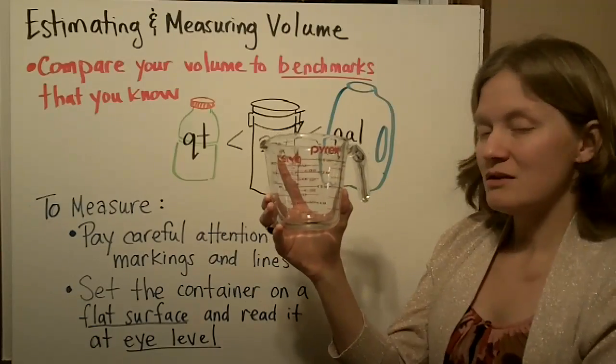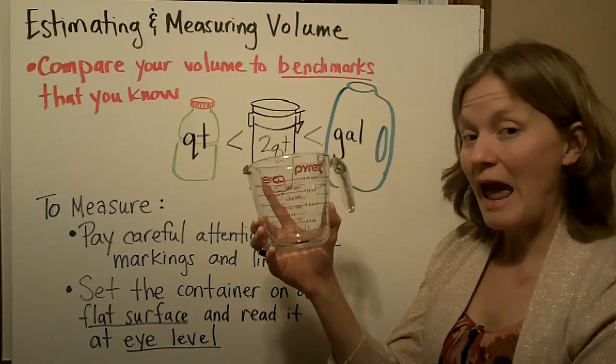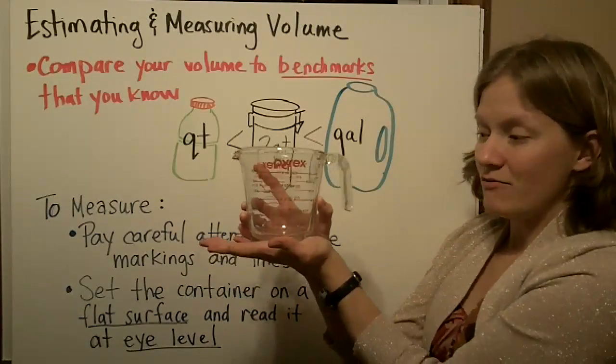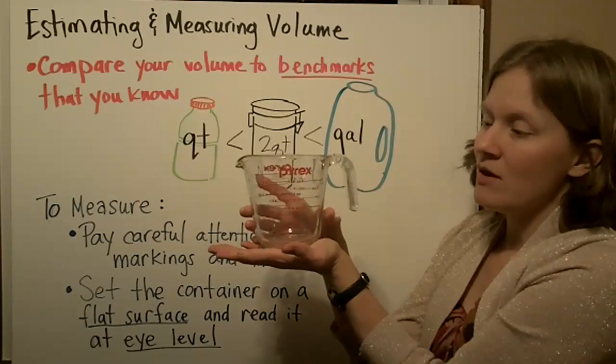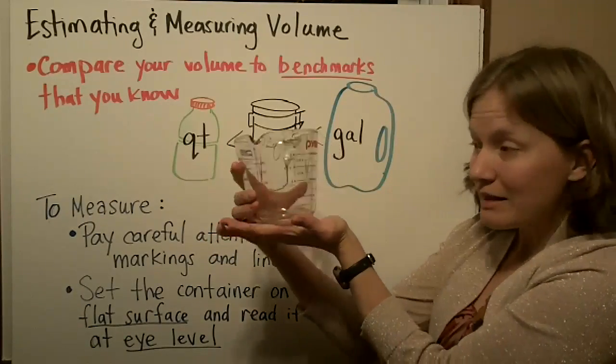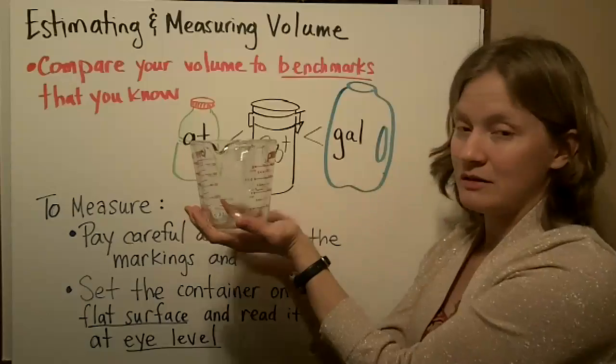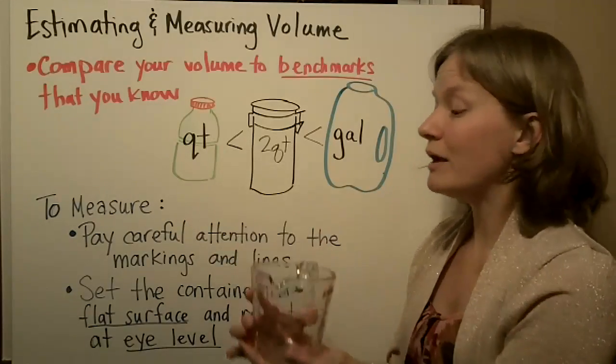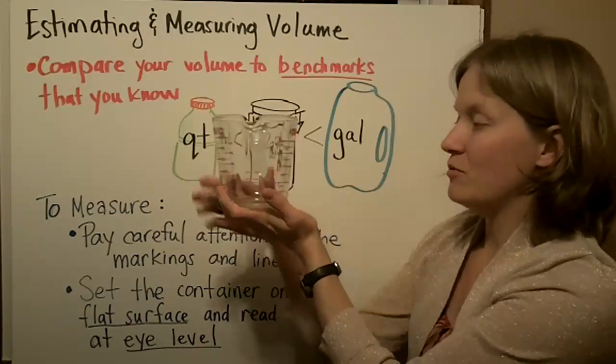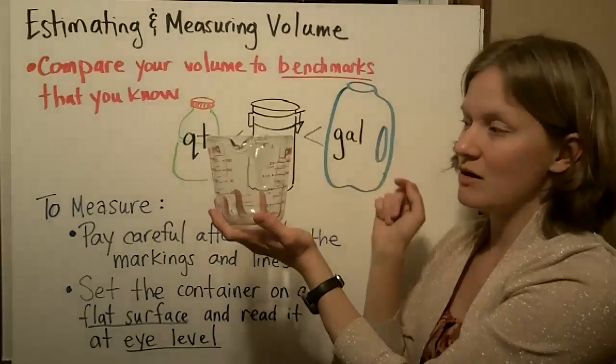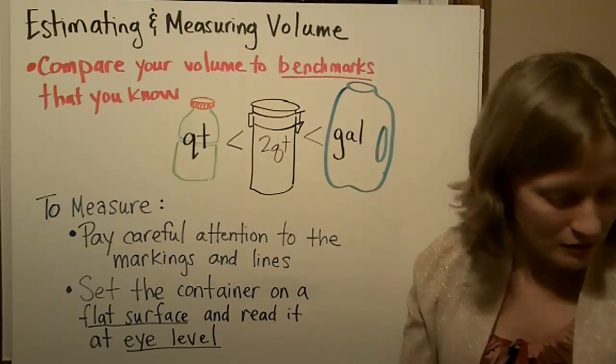To get an accurate reading, you need to set it on a flat surface. Then get at eye level to read it head on. You don't want to be way above or below it. Look at the liquid line straight on to measure accurately.